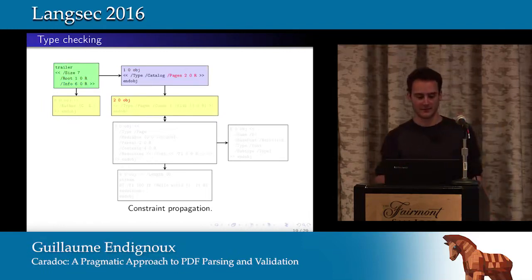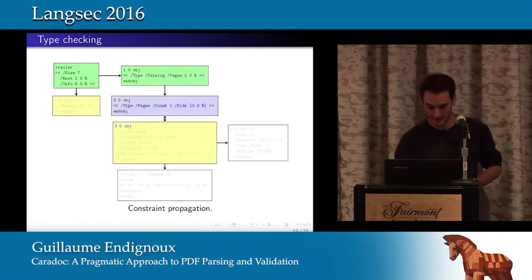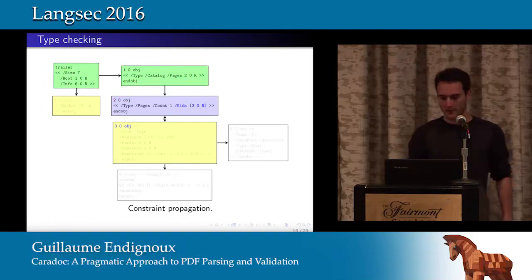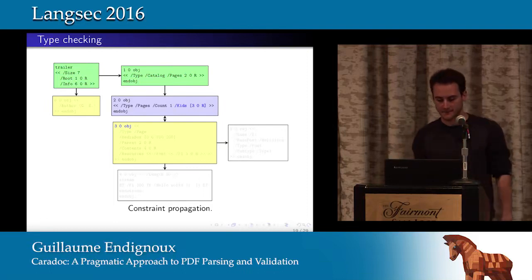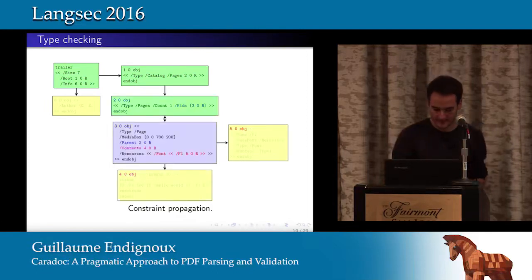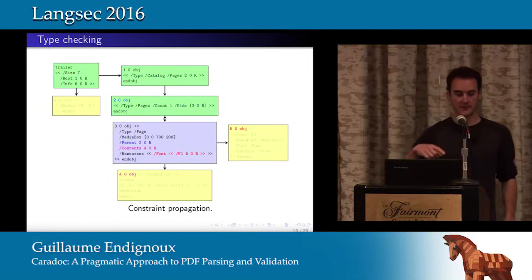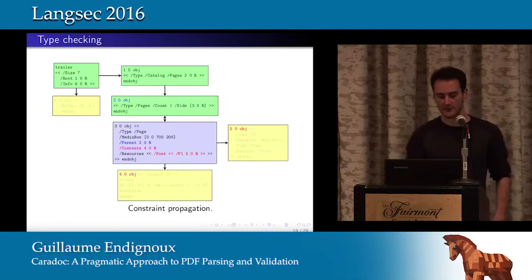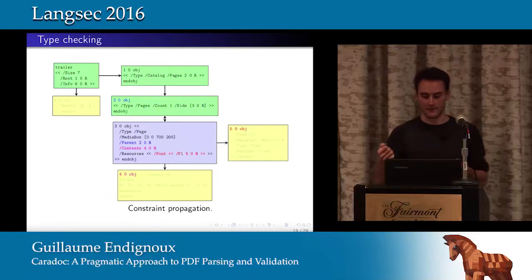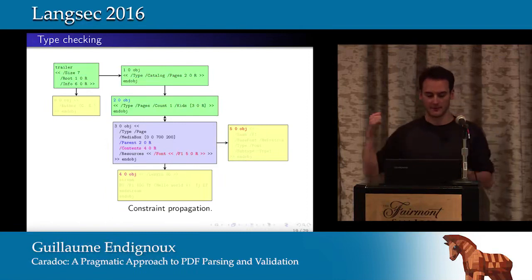From the root field we can infer that object number one is of type catalog and object number six is of type info. Going to the catalog, we see that object number two should have type "pages." Object number one is checked. We see an array of kids, which are the pages, so we infer that object number three is in the page tree. When we arrive at the page, we check its fields and confirm object number two is of type page root.